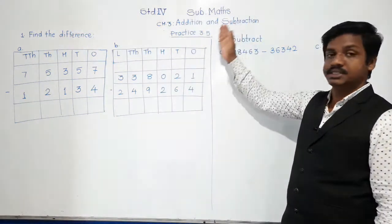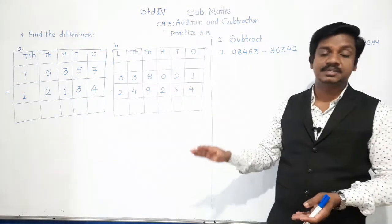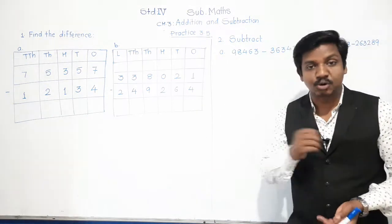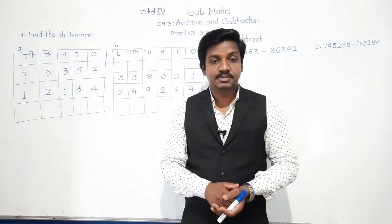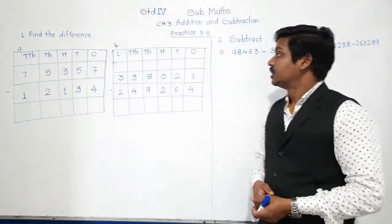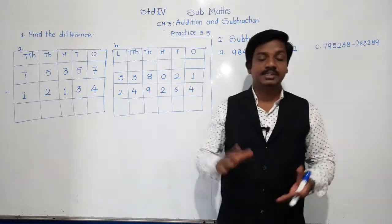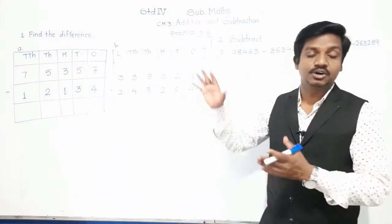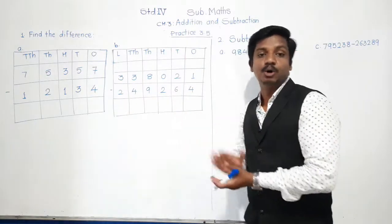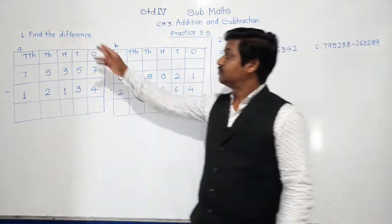The second part of this lesson is subtraction. In subtraction we are going to see simple subtraction, subtraction with borrowing, properties of subtraction, word problems on subtraction, and estimating difference. In today's period we are going to see what is meant by subtraction and how to subtract five-digit and six-digit numbers, both without borrowing and with borrowing. So let's go for it — Practice 3.1, first question: find the difference.